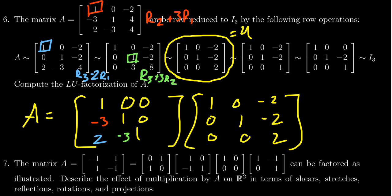And so that would then, this would then give us L. This then gives us U. And we have the LU factorization.